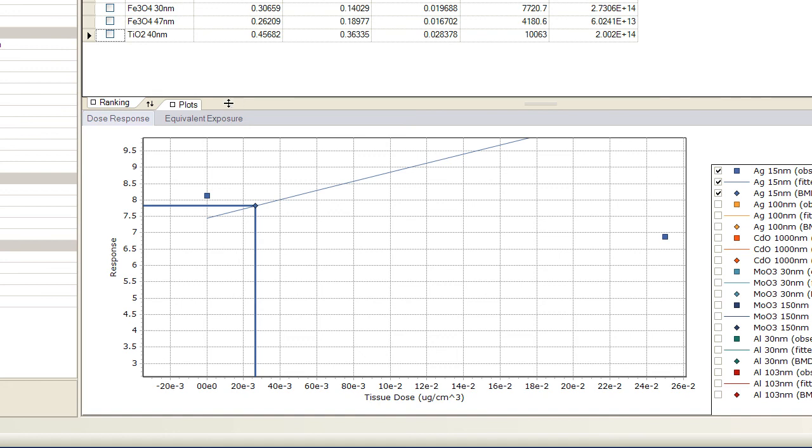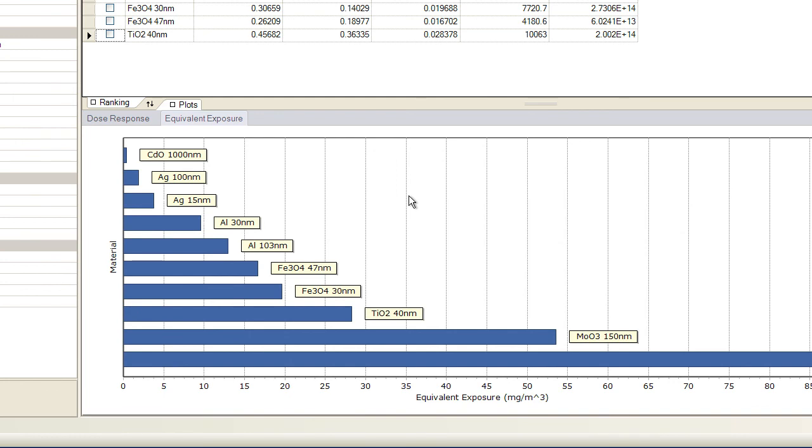The equivalent exposure plot shows the computed equivalent inhalation exposure in units of milligrams per meter cubed for each of the materials included in the hazard ranking. The bars in this chart are ordered such that materials at the top of the list correspond to a smaller equivalent exposure to produce the safe tissue dose.